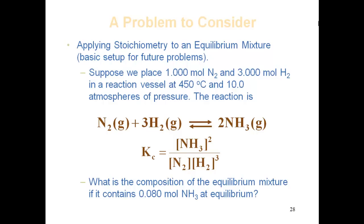So we're going to handle a problem with moles. Suppose we place 1 mole of N₂ and 3 moles of H₂ into a reaction vessel at 450°C and 10 atmospheres of pressure. The reaction we're talking about is N₂ + 3H₂ gives you 2NH₃.